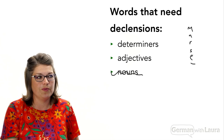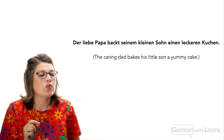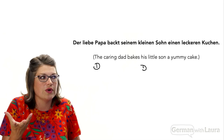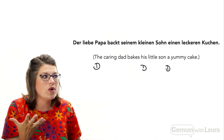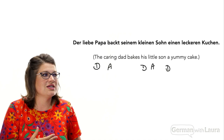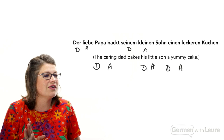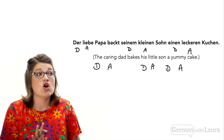If we look at our familiar sentence in English and German, we can see: 'the' is a determiner telling us which dad we're talking about; 'his' is a determiner — what son are we talking about; 'a' is also a determiner — how many cakes, it's a cake, not twenty cakes. 'Caring' is an adjective, 'little' is an adjective, 'yummy' is an adjective — it describes the noun in some way. It's exactly the same thing in German. Determiners and adjectives come in front of the nouns, and those determiners and adjectives are where we see our declensions: R, E, M, N, and the double N.